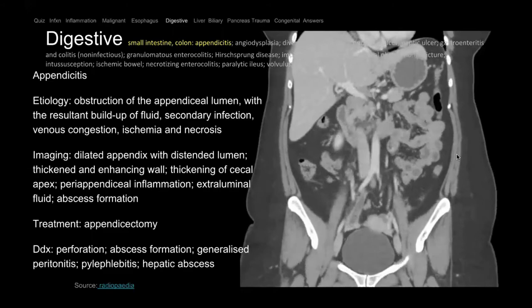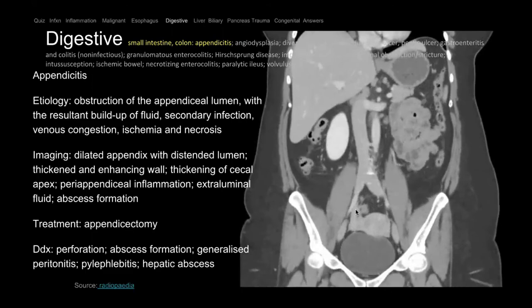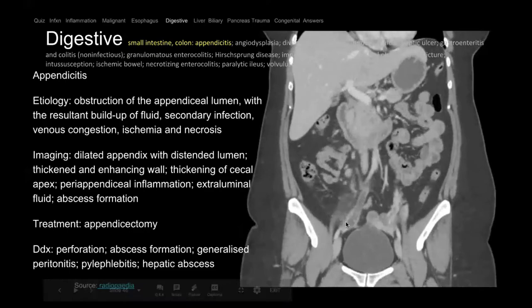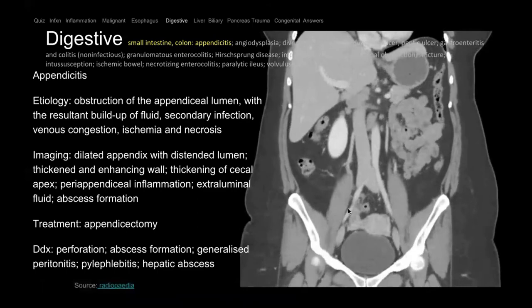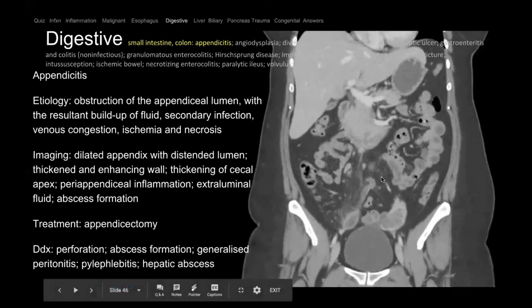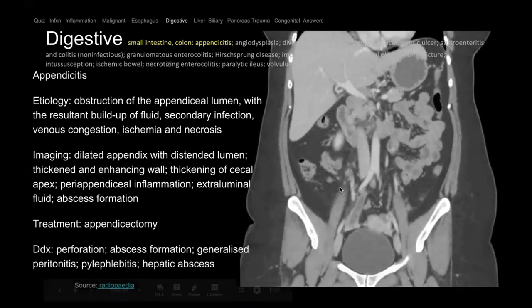Moving on to digestive systems. Here we have a patient with right lower quadrant pain — this is the appendix, a blind-ending tube. There's fluid and appendicoliths — little stones — in it. The fat around the appendix is gray with stranding — fluid intercalating into the fat. This is appendicitis. Appendicitis is treated with surgery, except if it's perforated. A perforated appendix can cause an abscess that needs to be drained by interventional radiology.